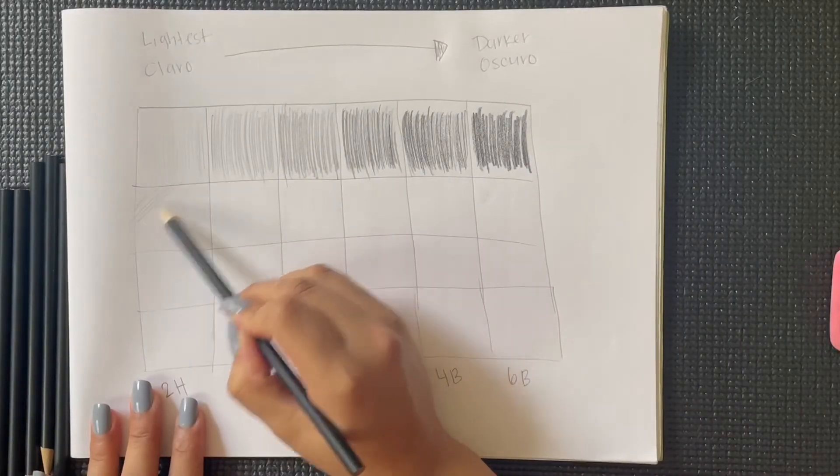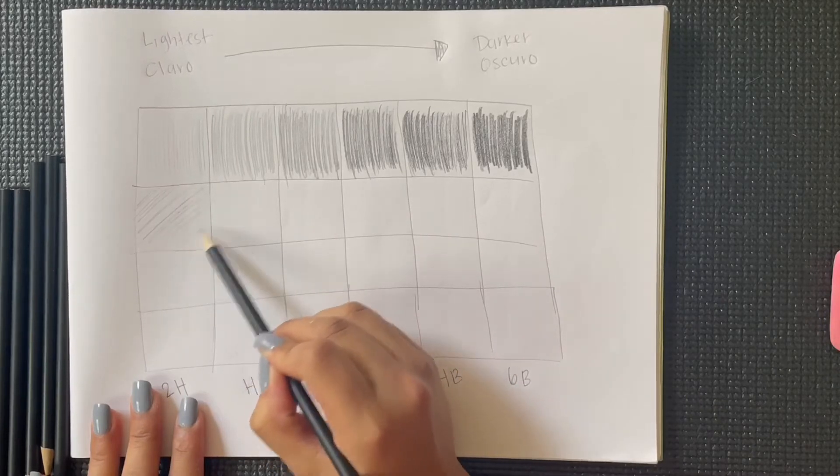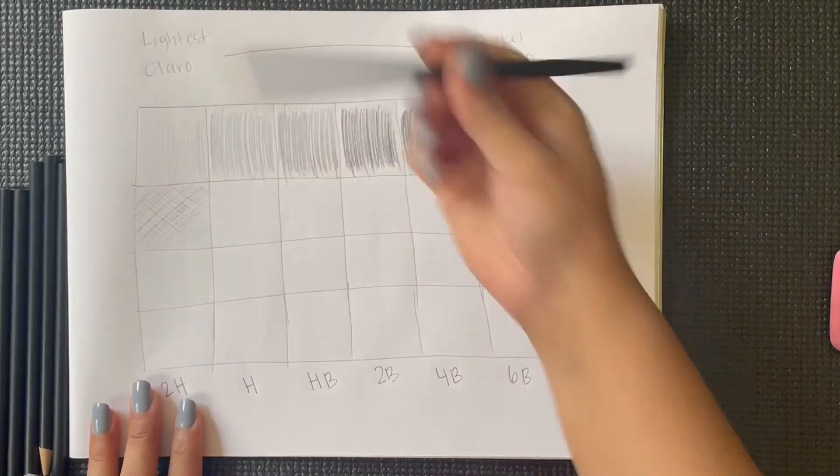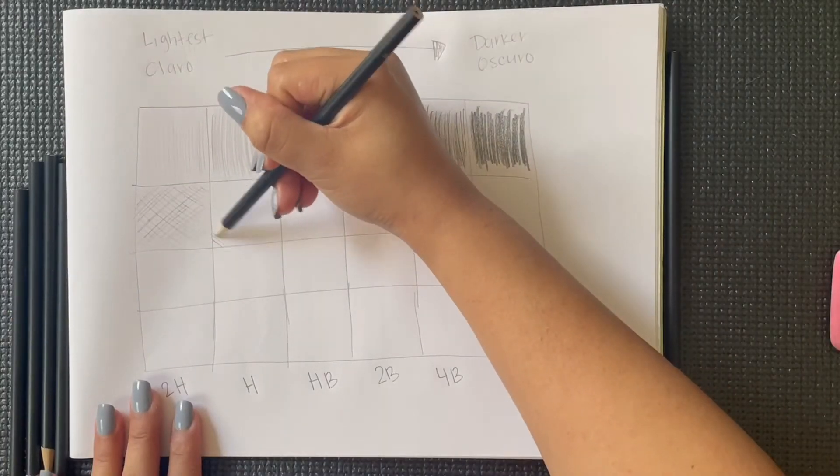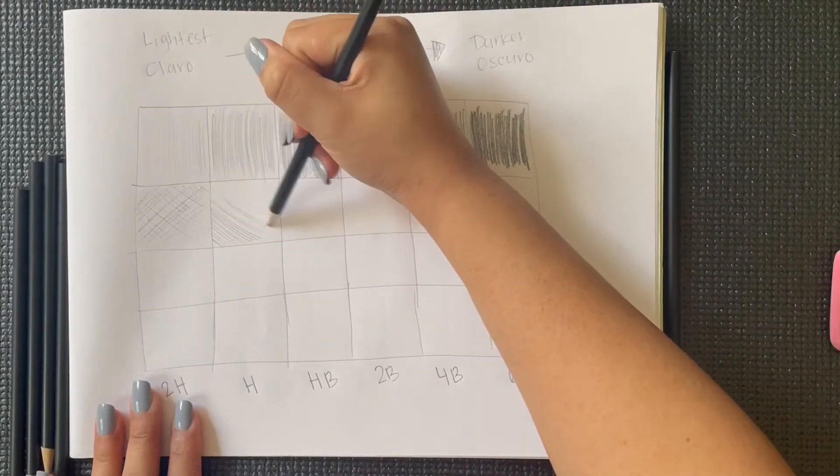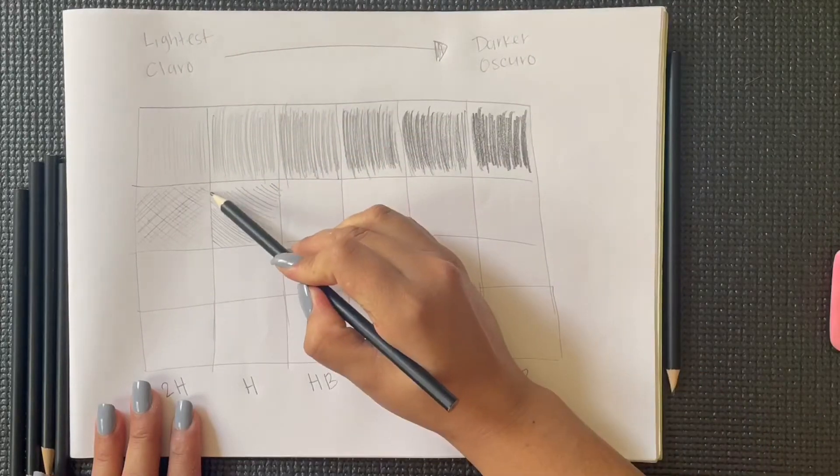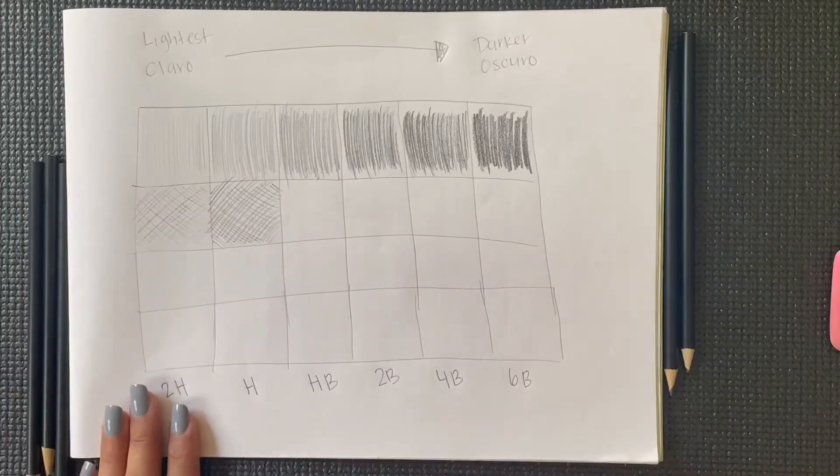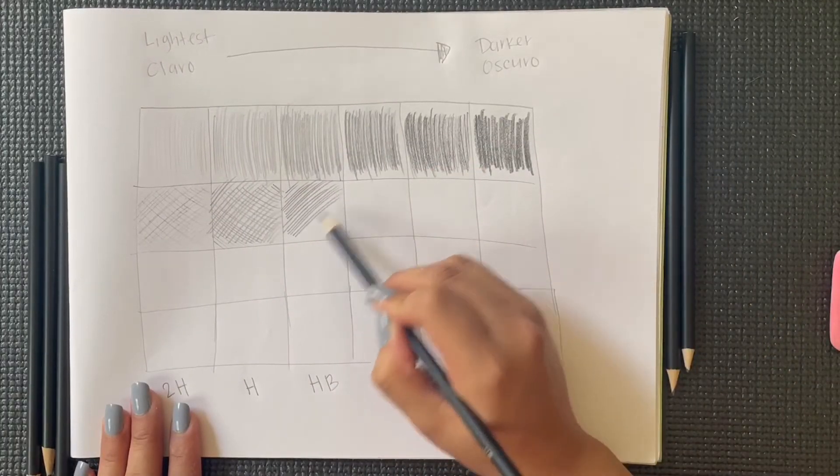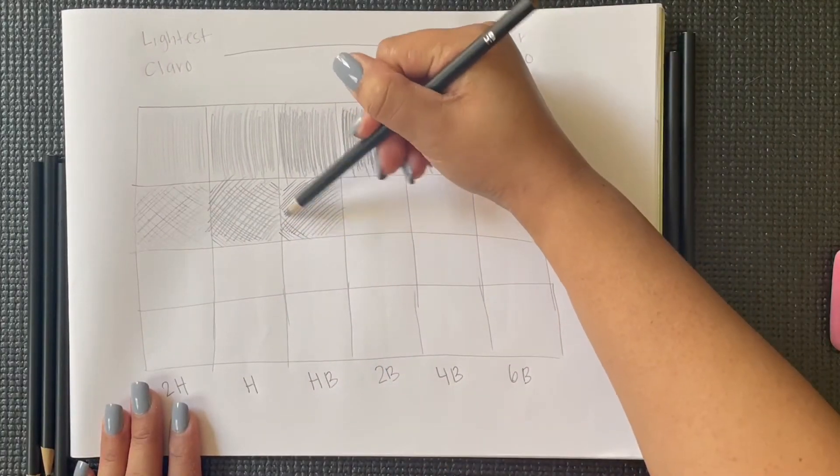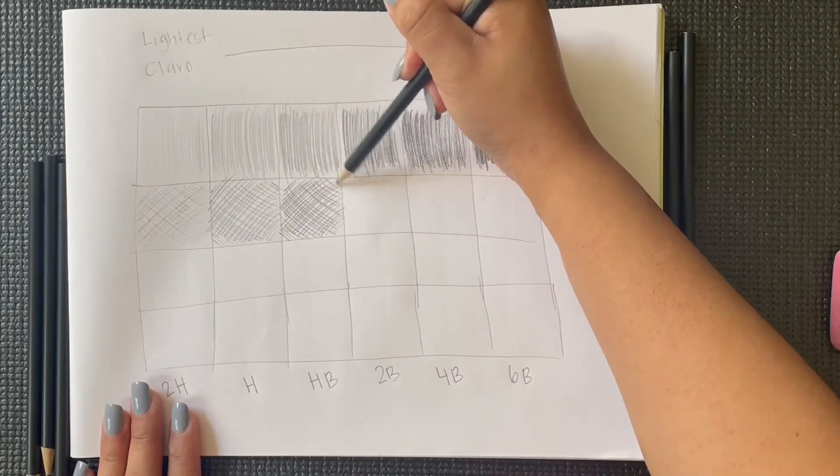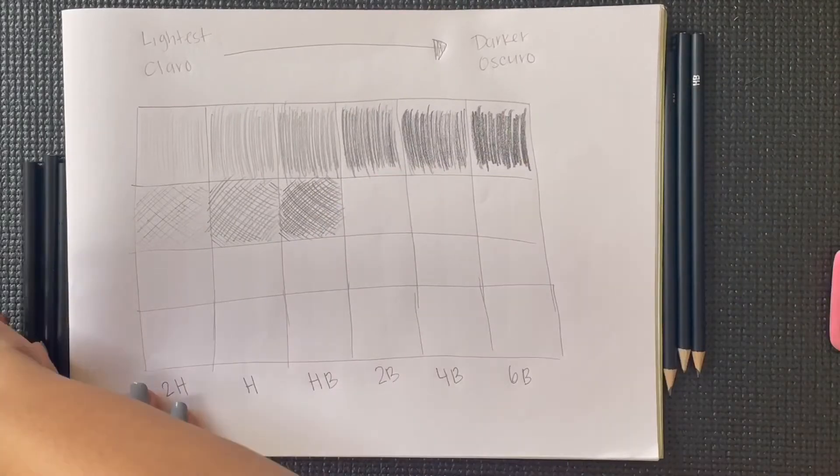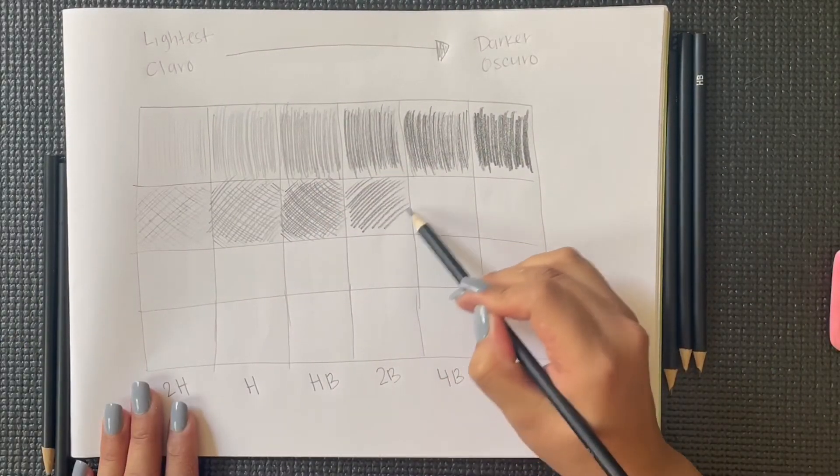Now we will do cross hatching. Ahora estaremos haciendo rayados pero cruzados. Empezamos con nuestro lápiz de un lado haciendo rayas y después lo hacemos al lado contrario. We will start by doing our lines at an angle and crossing them the other way. Don't forget to change your pencil. No se te olvide cambiar tu lápiz.